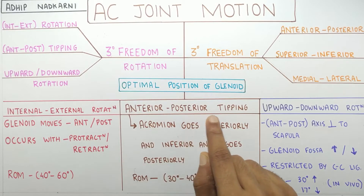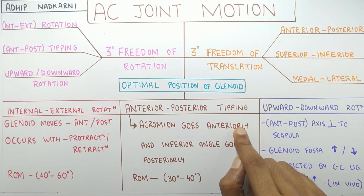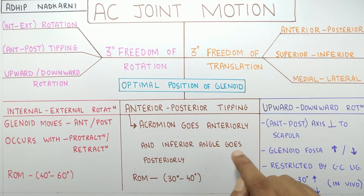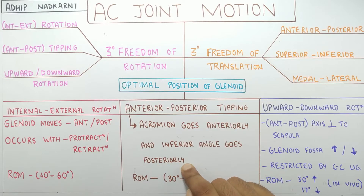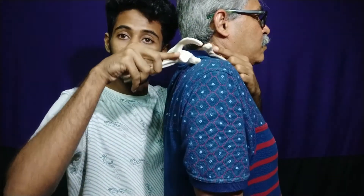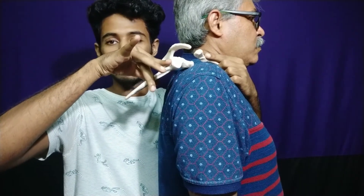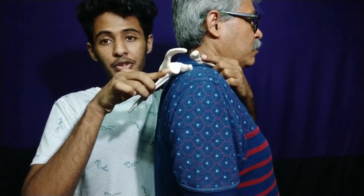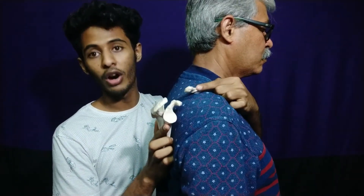Next is anterior and posterior tipping. This happens when the acromion goes anteriorly and the inferior angle of the scapula goes posteriorly. The range of motion for this is around 30 to 40 degrees. During anterior tipping, your acromion goes in the forward direction and the inferior angle of the scapula goes posteriorly, and then the other way is posterior tipping. This occurs during elevation and depression of your shoulder joint — elevation produces anterior tipping and depression produces posterior tipping.